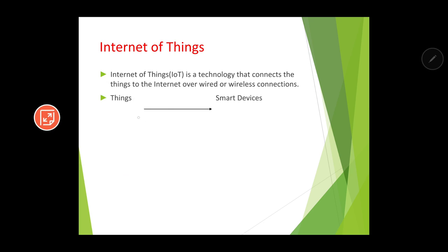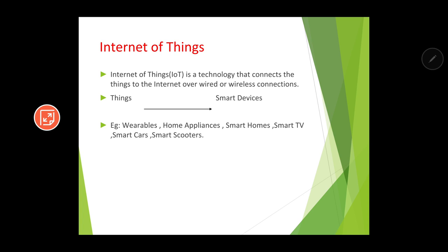In the case of Internet of Things, things become smart devices, and therefore we are able to control those smart devices with the help of the internet. Some examples of IoT include wearables, home appliances, smart homes, smart TVs, smart cars, and smart scooters. For example, a normal digital or analog watch that cannot connect to the internet is just a 'thing.'